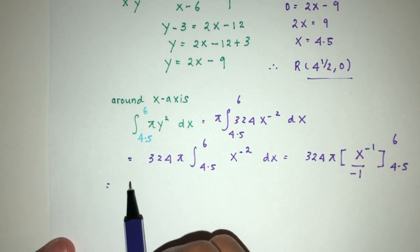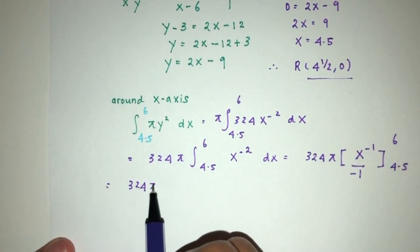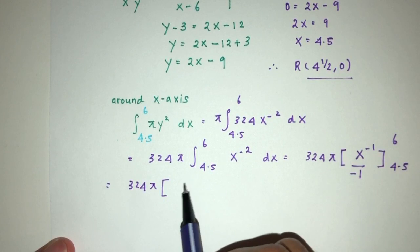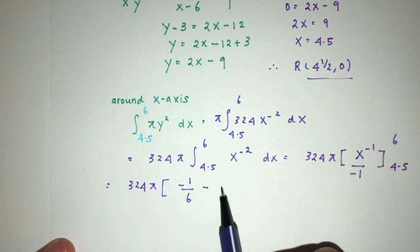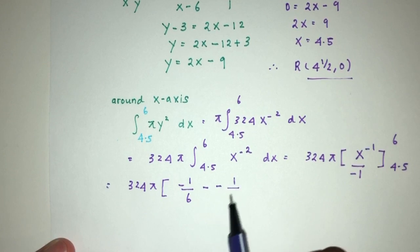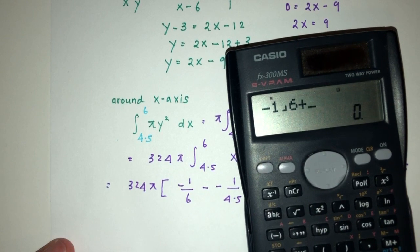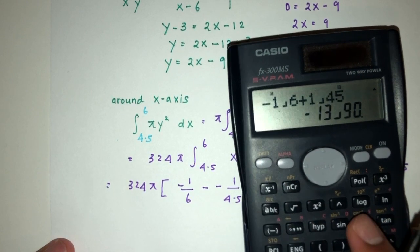So you will have 324 pi times minus 1 over x at 6, then minus minus 1 over 4.5. So minus 1 over 6 plus 1 over 4.5.